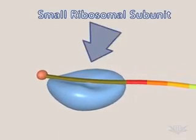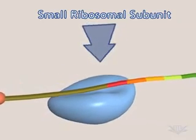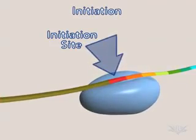Translation initiation begins when the small subunit of the ribosome attaches to the cap and moves to the translation initiation site.